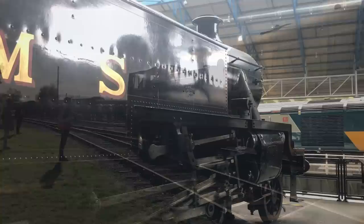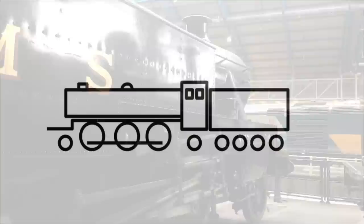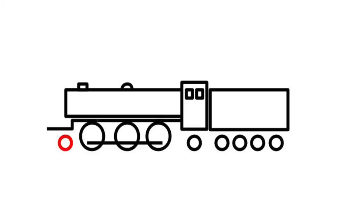Maybe I should just explain how it works. The Whyte system consists of, typically, three numbers. The first number represents the number of unpowered wheels that support the locomotive at the front. The middle number represents the driving wheels — that is, the connected wheels through which power is transmitted from the cylinders. And the final number represents the number of unpowered wheels at the back. Larger engines often have a tender to carry coal and water; this isn't counted as part of the locomotive, so the wheels aren't listed.